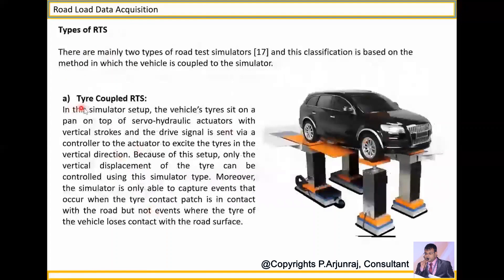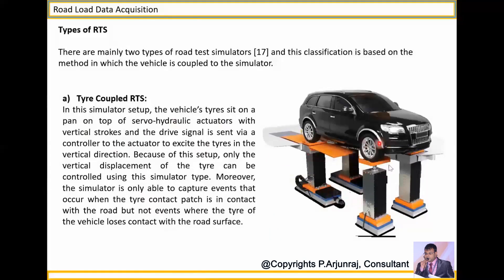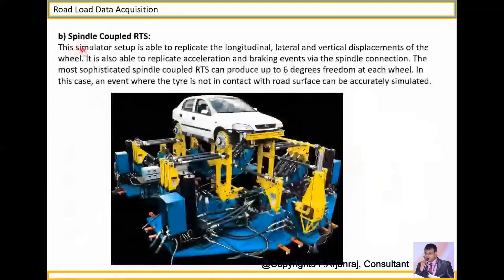There are different types of RTS. The first is the tire coupled RTS, where the vehicle tire sits on a pan on top of a servo hydraulic actuator with vehicle strokes. A drive signal is sent through a controller to the actuator to excite the tires in the vertical direction. This gives details on the vertical displacement of the tire and how the tire behaves in contact with the road under different road conditions and braking.